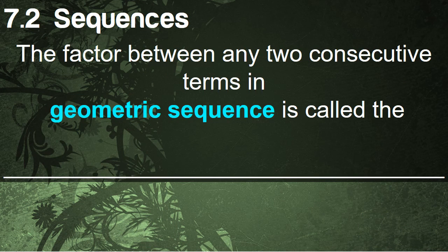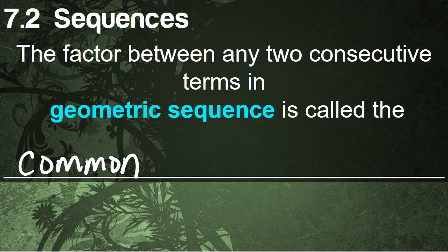The factor between any two consecutive terms in a geometric sequence — the number we multiply by each time — is called the common ratio.